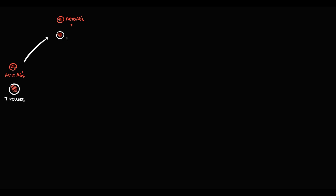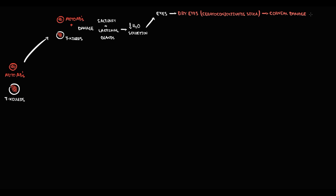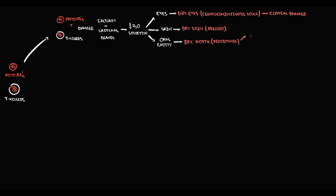In Sjögren's syndrome, we have two major pathogenic components: autoantibodies and activated T killers. Together, autoantibodies and T killers can cause direct damage to salivary glands and lacrimal glands. In the eyes, damage to lacrimal glands can cause dry eyes, a condition we call keratoconjunctivitis sicca. The major problem is that decreasing corneal lubrication causes corneal damage that can significantly affect vision. In skin, decreasing sweat gland secretion causes dry skin, a condition called xerosis. In the oral cavity, damage to salivary glands causes dry mouth, or xerostomia.